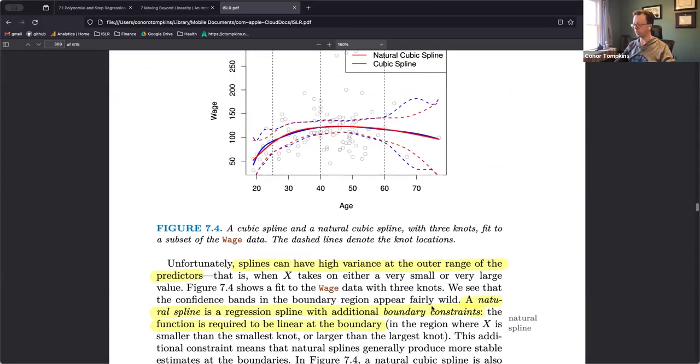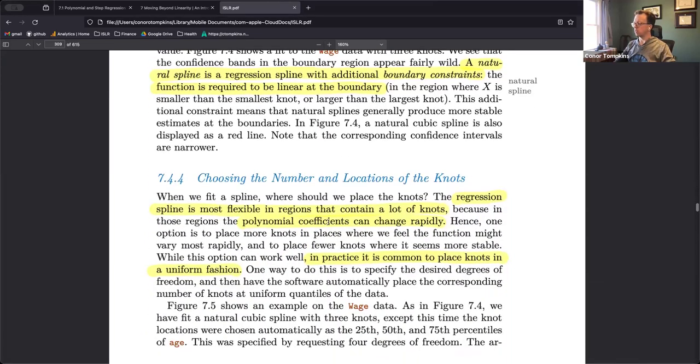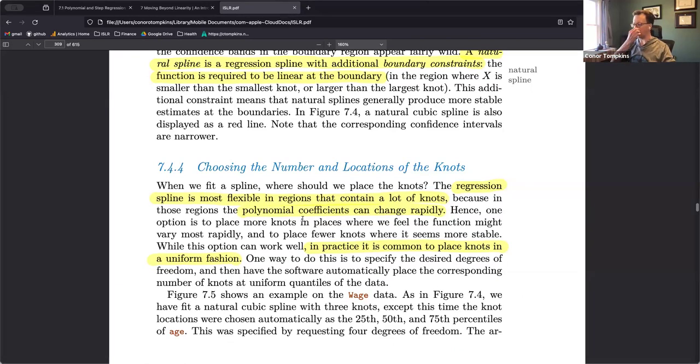Okay, so natural splines have one additional boundary constraint where the boundary also has to be linear. Here you can see that they end up basically at the same area at the very end of the data, but the path is much more smooth. Where it gets very jumpy on the cubic spline, this natural cubic spline is much more smooth at the boundary. Again, the confidence intervals are still wide but they're not as wide, the variance is lower.